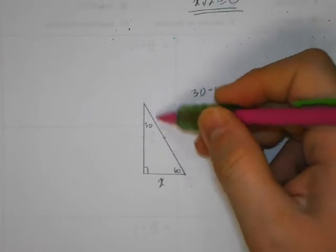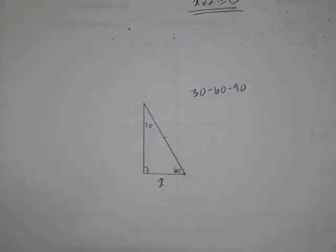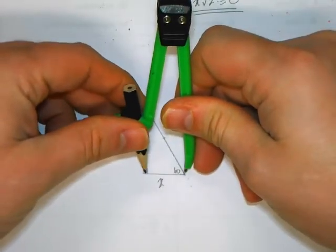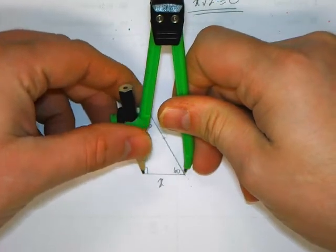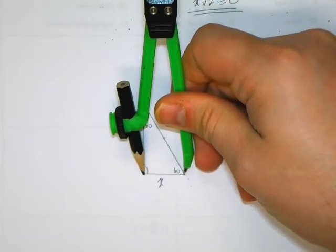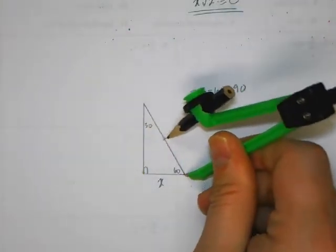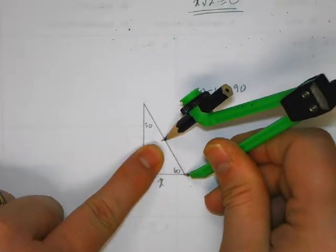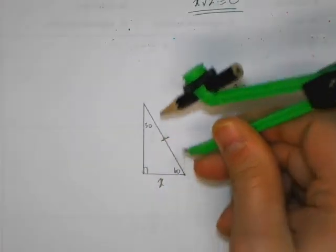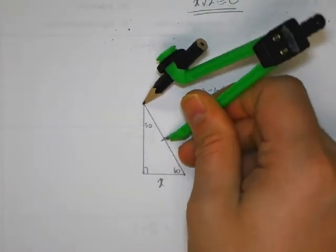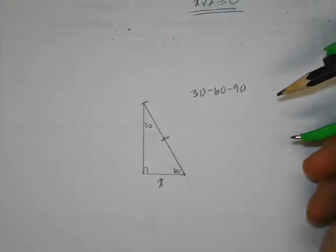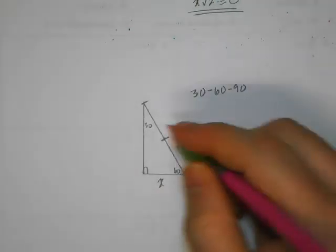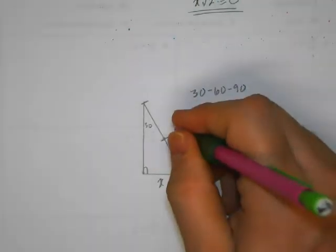I'll grab my compass to measure the short leg. Opening it to the width of the short leg, I make a mark on the hypotenuse. The length from this corner to where the pencil point is equals the length of the short leg. Looking at the result, the length of the hypotenuse equals the length of the short leg, and there are two of them there — so the hypotenuse is 2x.